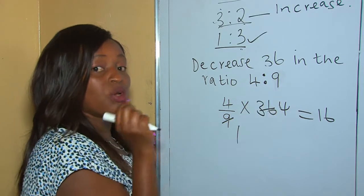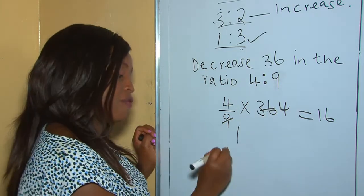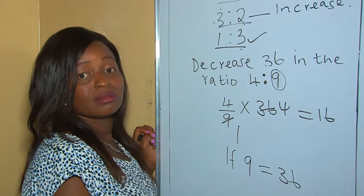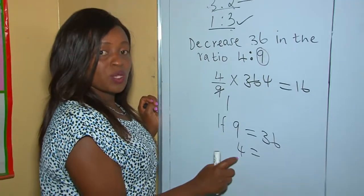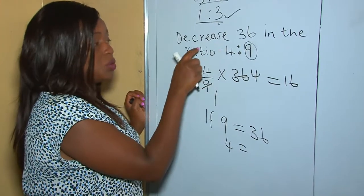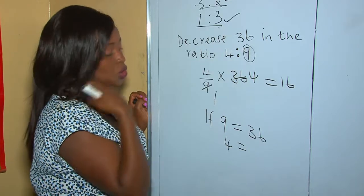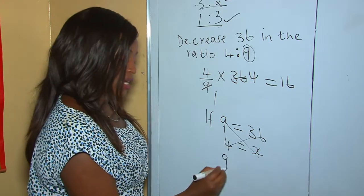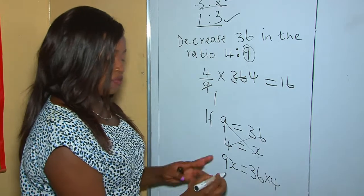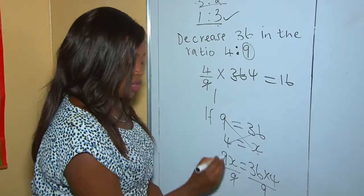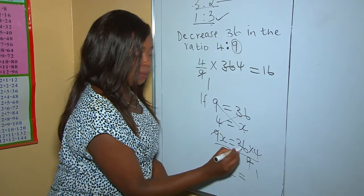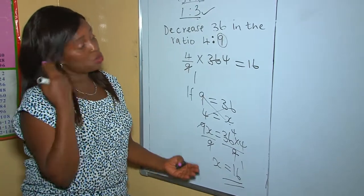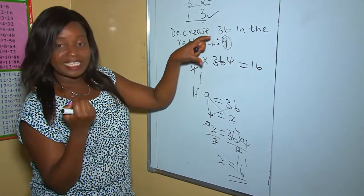You can also use cross multiplication. According to the ratio, the original number is 9. So you say: if 9 in the ratio equals 36, what does 4 equal? We are looking to decrease using this ratio. Cross multiply: 9 times x equals 36 times 4. We divide both sides by 9, so x equals 36 divided by 9, times 4, which gives us 16. You can use either the fraction formula or cross multiplication.